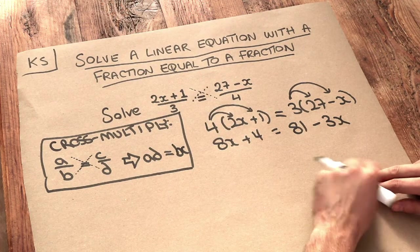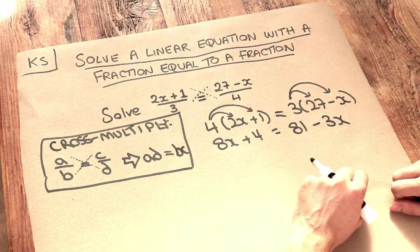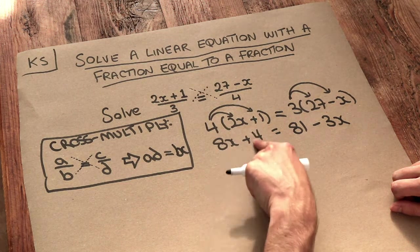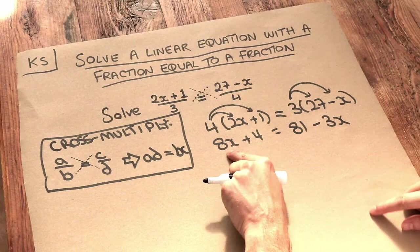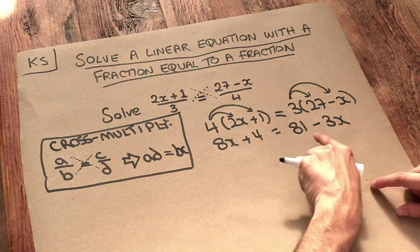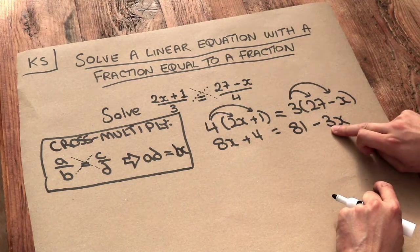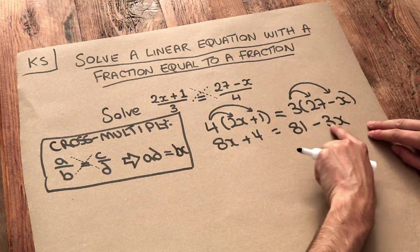Remember, we collect the x terms on the side with more x's. We've got more x's on the left-hand side than the right-hand side because 8 is bigger than minus 3. So we want to get rid of that minus 3x on the right-hand side. How do we get rid of minus 3x?